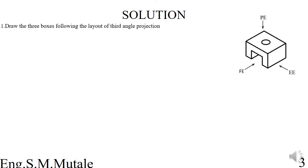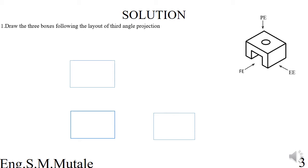Step one is to draw the three boxes following the layout of third angle projection. In third angle we have the front elevation with the plan on top, because what you see on top you draw on top, and what you see on the right you draw on the right. These boxes are not drawn arbitrarily — the front elevation box takes the length and base dimensions of the front.